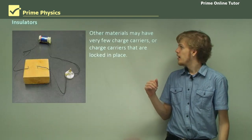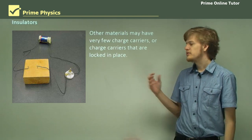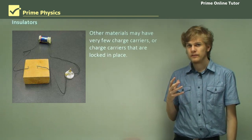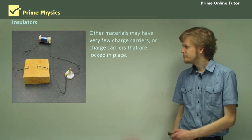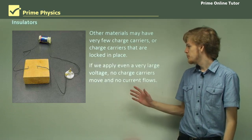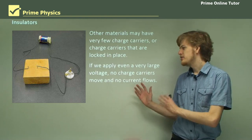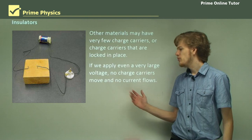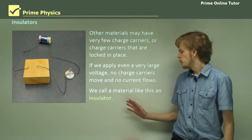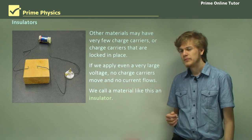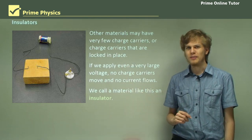Other materials might have very few charge carriers, or they might have charge carriers that are locked in place. An example of a material like this is a block of wood. If we apply a very large voltage, we won't get any charge carriers moving and we won't get any current flowing. We call a material like this an insulator. You can see that when you connect an insulator in a circuit, you won't get the light bulb lighting up.